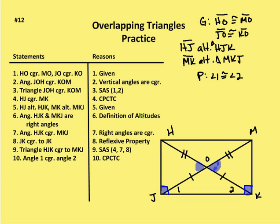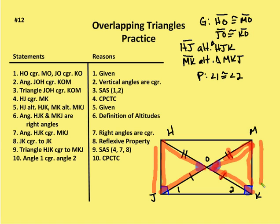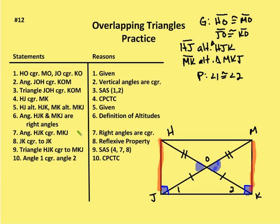By side-angle-side, triangle JOH is congruent to triangle KOM. Now I can say that side HJ is congruent to MK by CPCTC. I've now got HJ congruent to MK. I also know that HJ is the altitude of HJK and MK is the altitude of MKJ — stated as a given. Angles HJK and MKJ are right angles by definition of altitudes, and angle HJK is congruent to angle MKJ because right angles are congruent to each other.